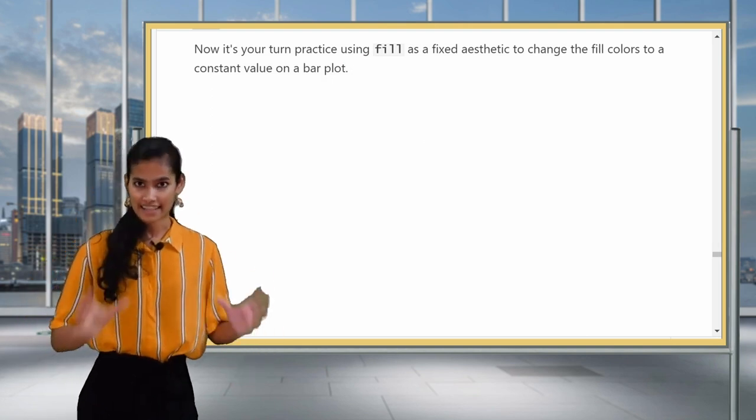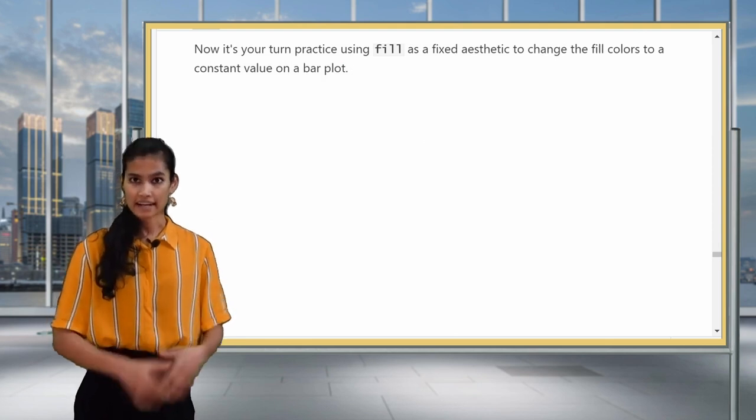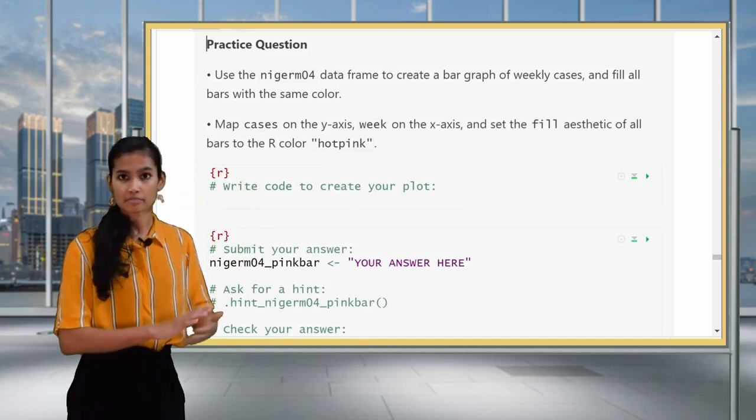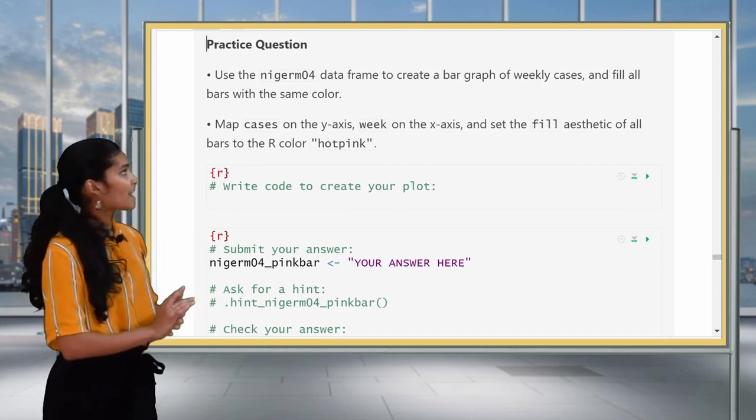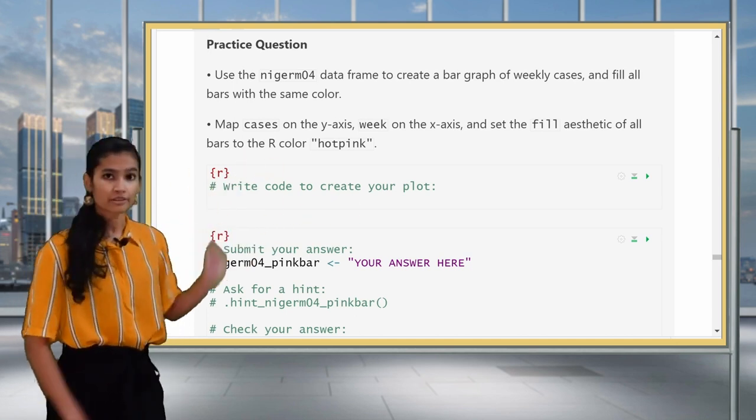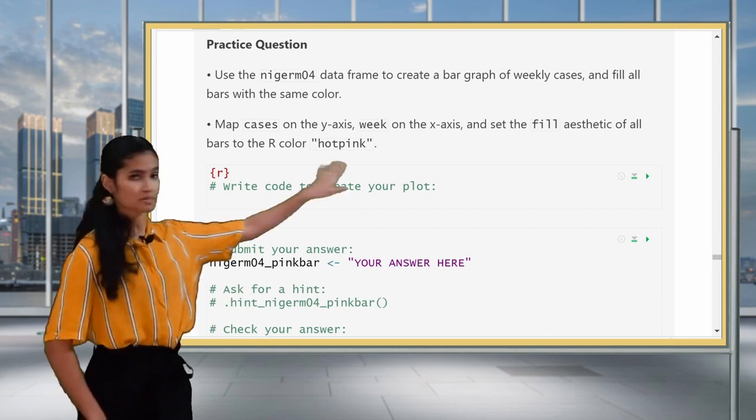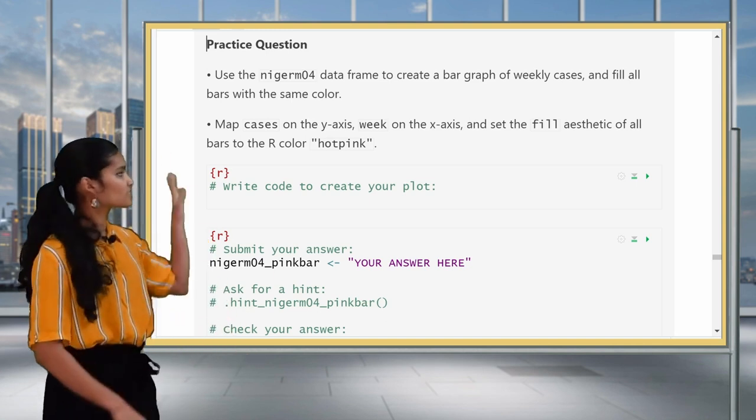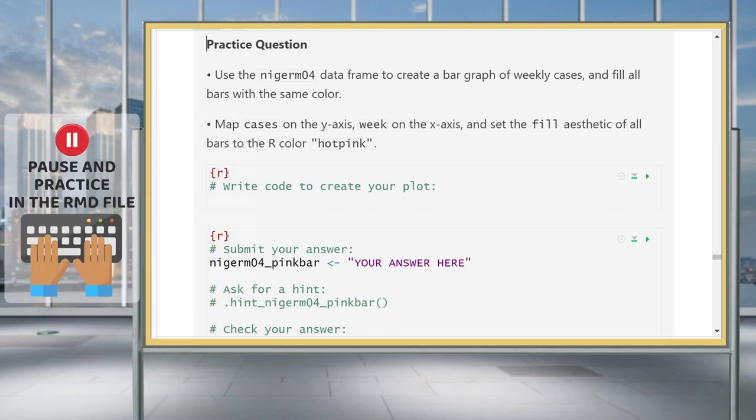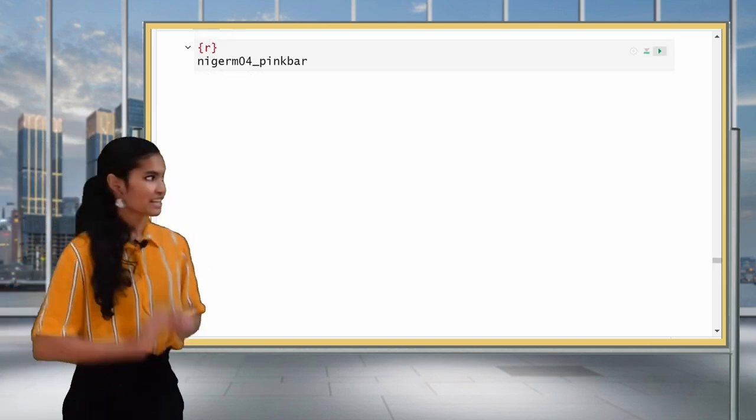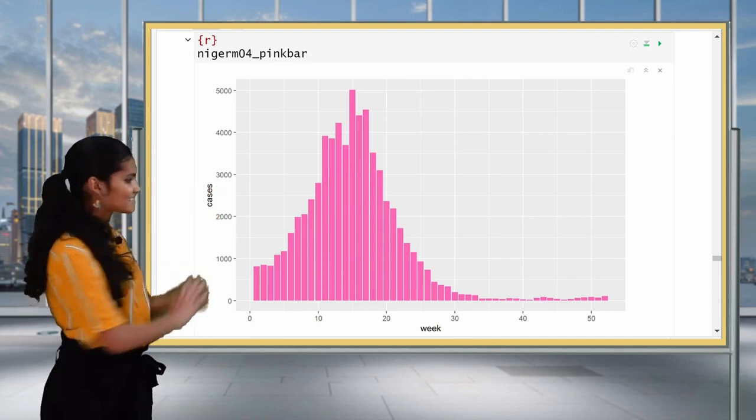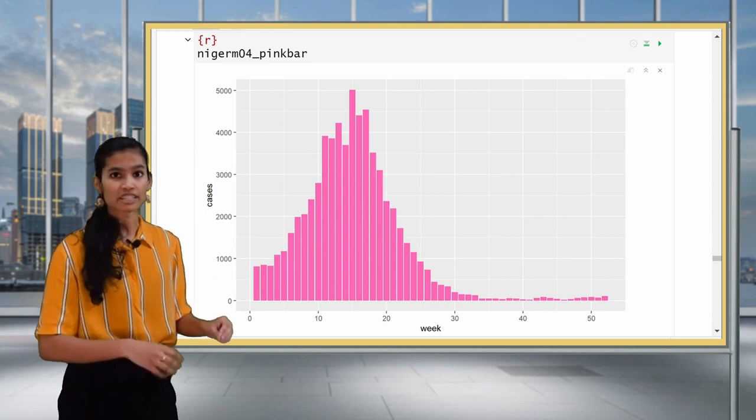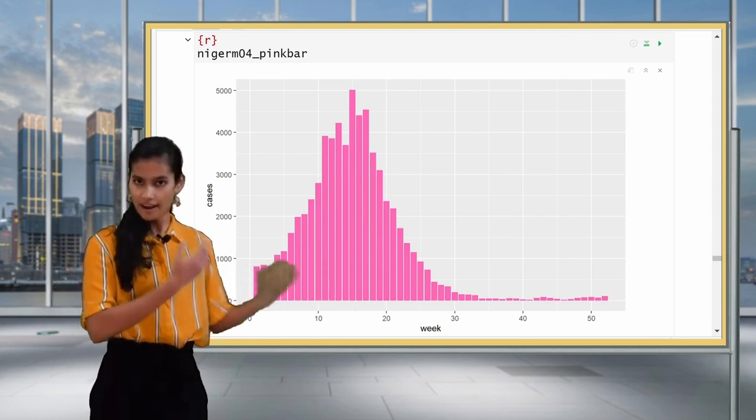So now it's your turn to use the fill aesthetic as a fixed aesthetic. You used it before as an aesthetic mapping for a bar plot, but now you're going to fix it to a constant value. So you'll use the same data and x and y variables as before using the Niger M04 data frame and mapping cases against week. And the R color that you want to use as your fixed aesthetic for filling the color of the bars is hot pink. I hope you had fun making your hot pink bar graph. We see that the region variable is no longer mapped. We don't have a color key showing us which color responds to which region. It's a fixed aesthetic and all the bars are uniformly colored hot pink.